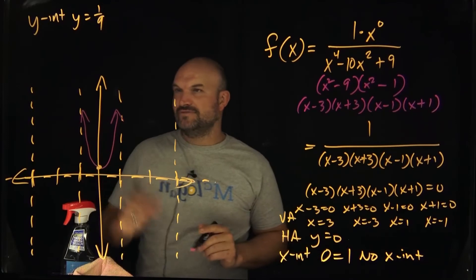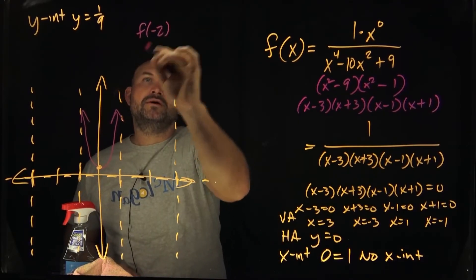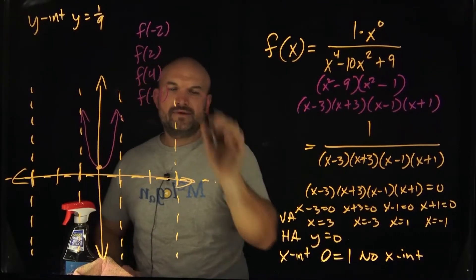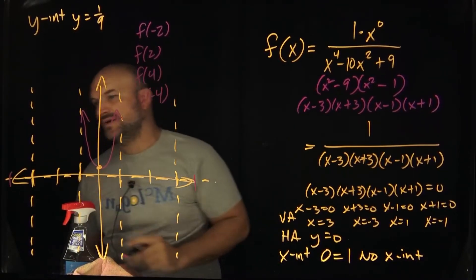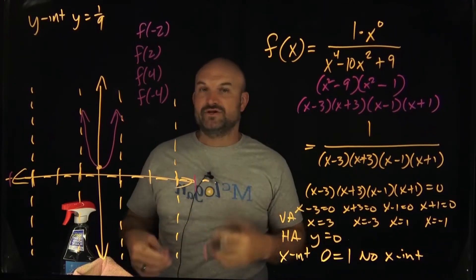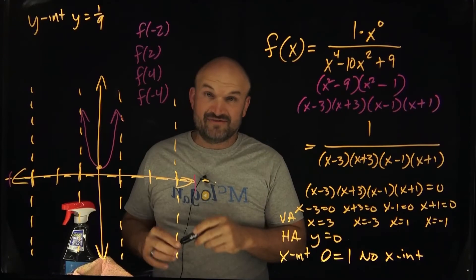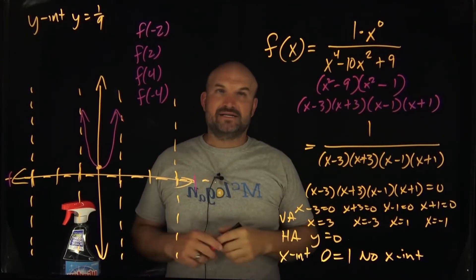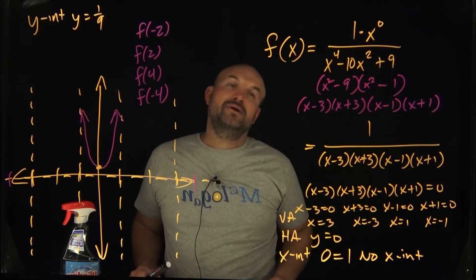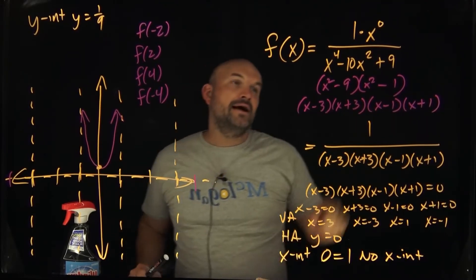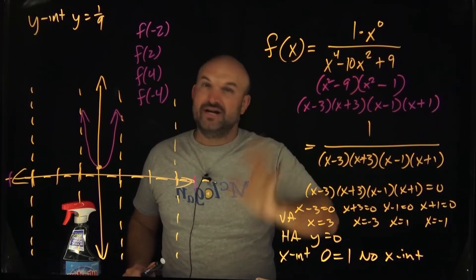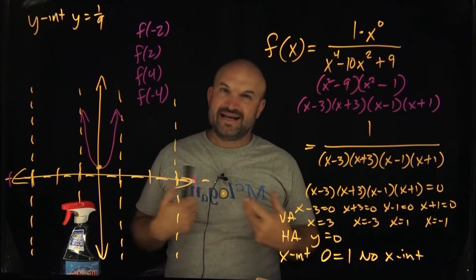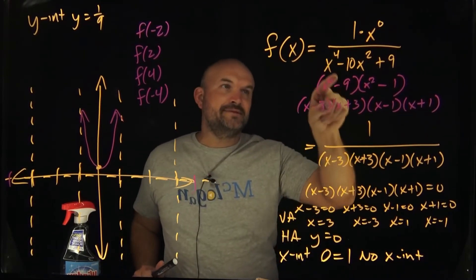Now, what about for negative one, negative two? What about f of negative two? What about f of two? What about f of four? And what about f of negative four? Because I want to know what's going on there to be able to identify where this graph is going. Because remember, it also has to approach this horizontal asymptote eventually. Since we already know one is going to be the numerator, I'm going to try to do as much mental math as I possibly can. So we have negative two to the fourth power. That is going to be 16. And then we have x squared.